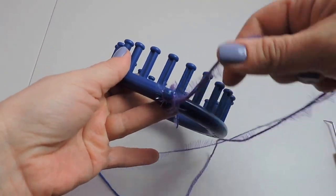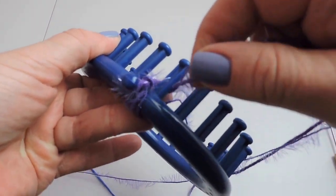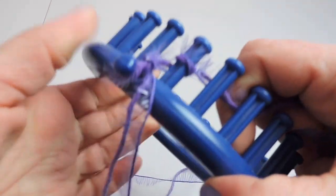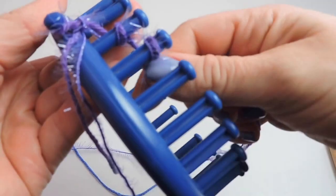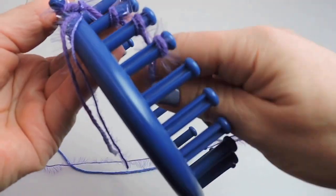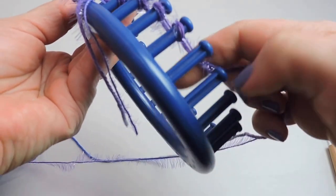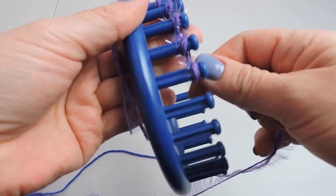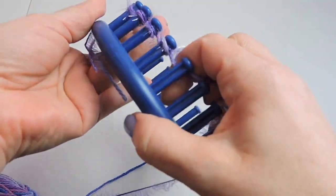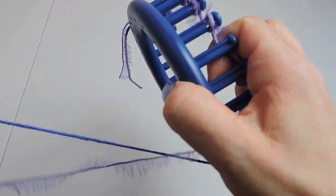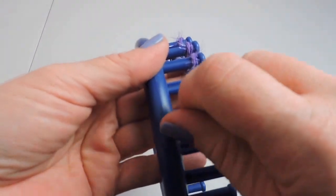Now we're going to start with the E-wrap cast-on. So I'm going to take both pieces of yarn and start to the peg at the right of the anchor peg, and just make little E's all the way around.